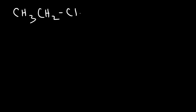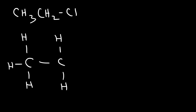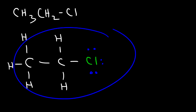Now try this one — ethyl chloride. We follow the same pattern: a CH₃ attached to a CH₂, and then that is attached to a chlorine atom. Chlorine is a halogen — it typically forms one bond and has three lone pairs. So this is the Lewis structure for ethyl chloride.